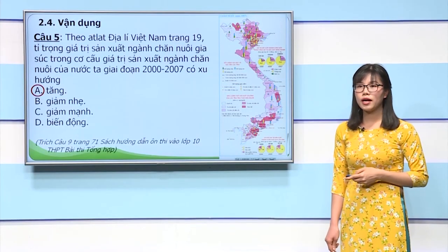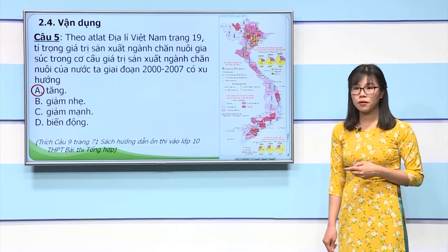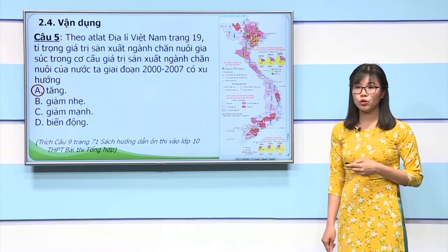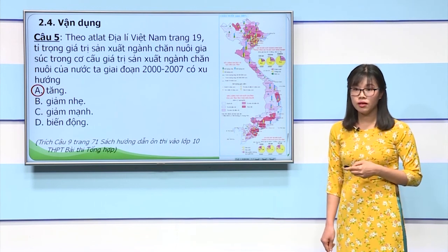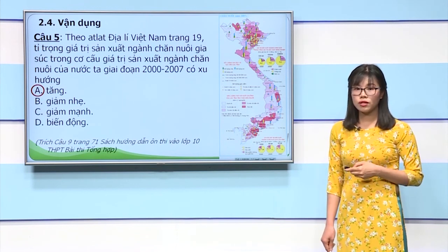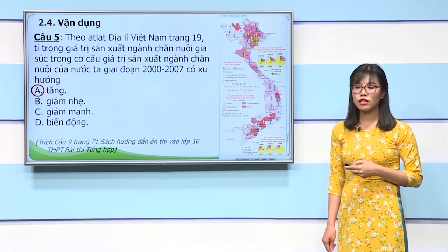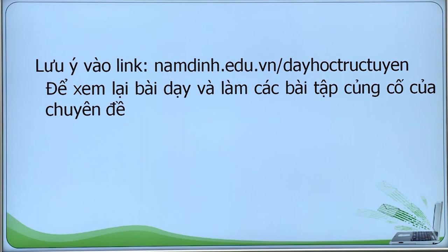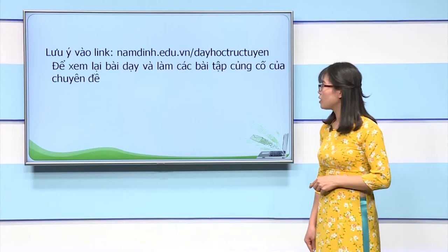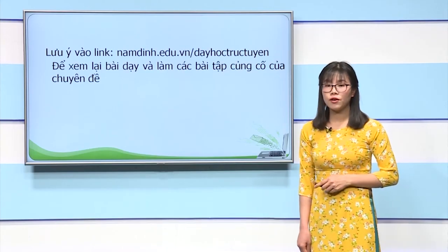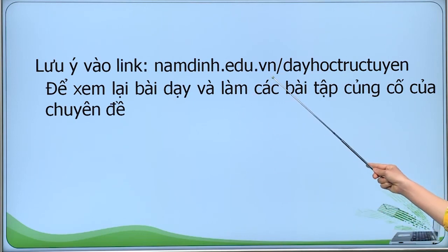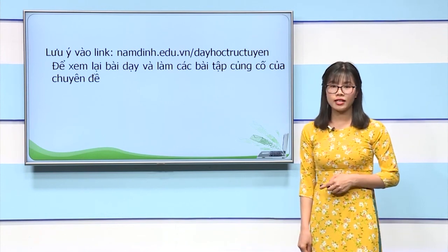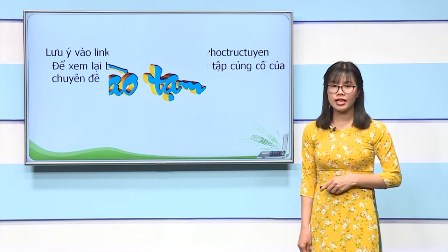Qua bài học ngày hôm nay, cô và các em đã ôn tập được 2 nội dung: chuyển dịch cơ cấu kinh tế và ngành nông lâm ngư nghiệp của chuyên đề ngành kinh tế Việt Nam. Tương tự với cấu trúc đã ôn tập, về nhà các em chuẩn bị nội dung ôn tập cho 2 phần còn lại của chuyên đề. Để xem lại bài dạy và làm các bài tập củng cố, các em có thể truy cập vào đường link namdink.edu.vn. Cô chúc các em ôn tập tốt và đạt kết quả cao trong các kỳ thi. Chào tạm biệt các em.